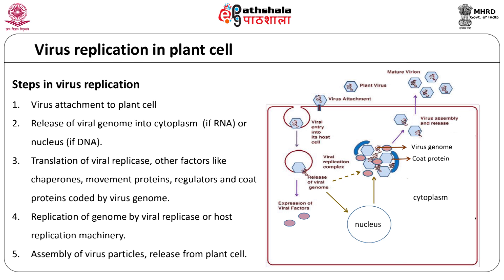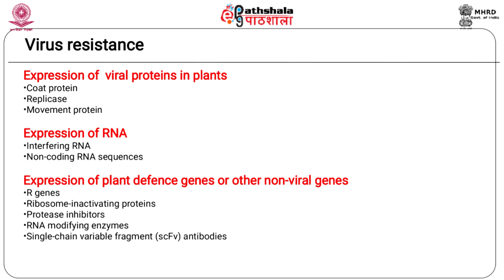Viral disease is caused by the use of building blocks and energy from plant cells by the virus for its own replication. Virus resistance in plants can be achieved by genetic engineering approaches. Resistance can be conferred by transferring virus-derived genes — including viral coat protein, replicase, movement protein, defective interfering RNA, and non-coding RNA sequences — into susceptible plants. Non-viral genes like R genes, ribosome inactivating proteins, proteinase inhibitors, RNA-modifying enzymes, and single-chain variable fragment antibodies have also been used successfully.